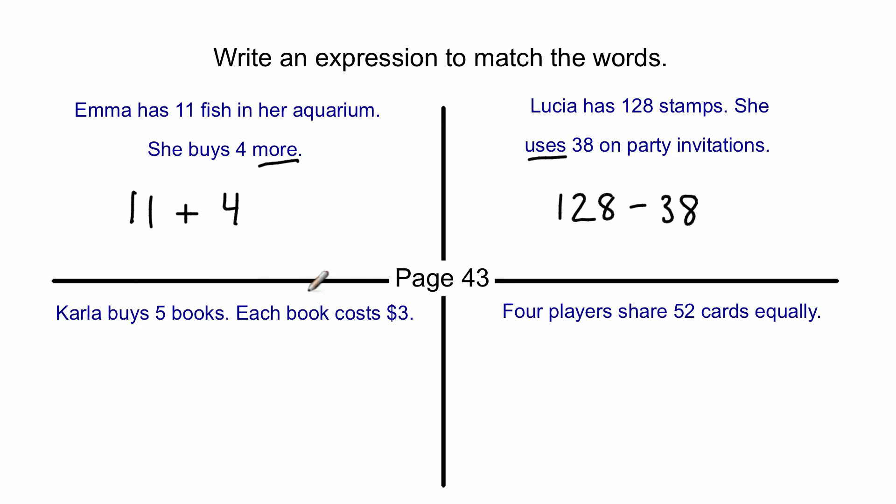All right, here we go. Carla buys five books. Each book costs $3. So I know five and three are going to be part of my number sentence. And I have to pick out a word that means some operation. Carla buys, let's see, that could be one. Books each, oh, there it is, each. So if each book costs $3, it's multiplying, because they're the same thing, and you're adding it five times, like five books for $3 each. That's always a multiplication.